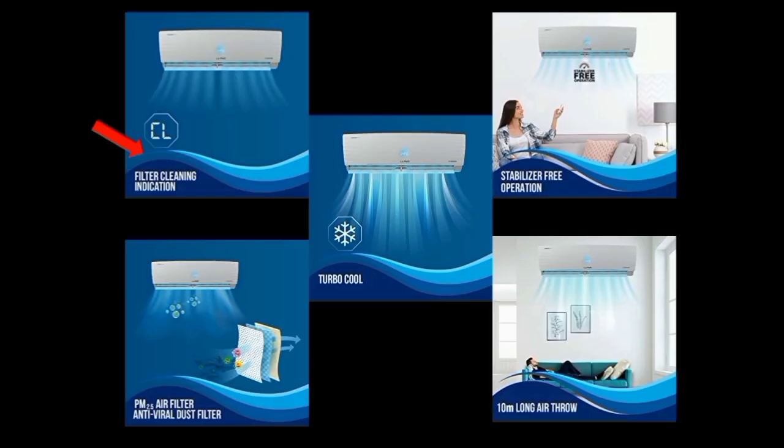The AC has some key specs. Here we have a high key spec — this is CL, which stands for filter cleaning. If the AC filter has accumulated too much dust, it will display CL, indicating the user should clean the AC's filter. Another key spec is the PM 2.5 filter, which removes dust particles from the room.